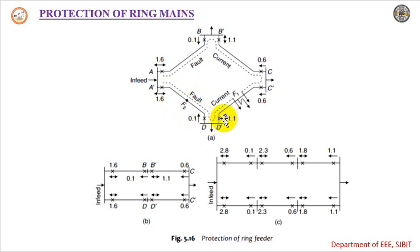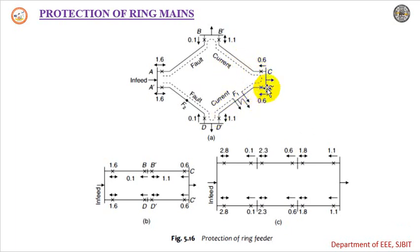The non-directional relay present here will trip. The directional relay at C', since the current is flowing in the same direction as the arrow, will trip. The non-directional relay at D' will also trip. Thereby, the faulty feeder will be disconnected from the ring mains.